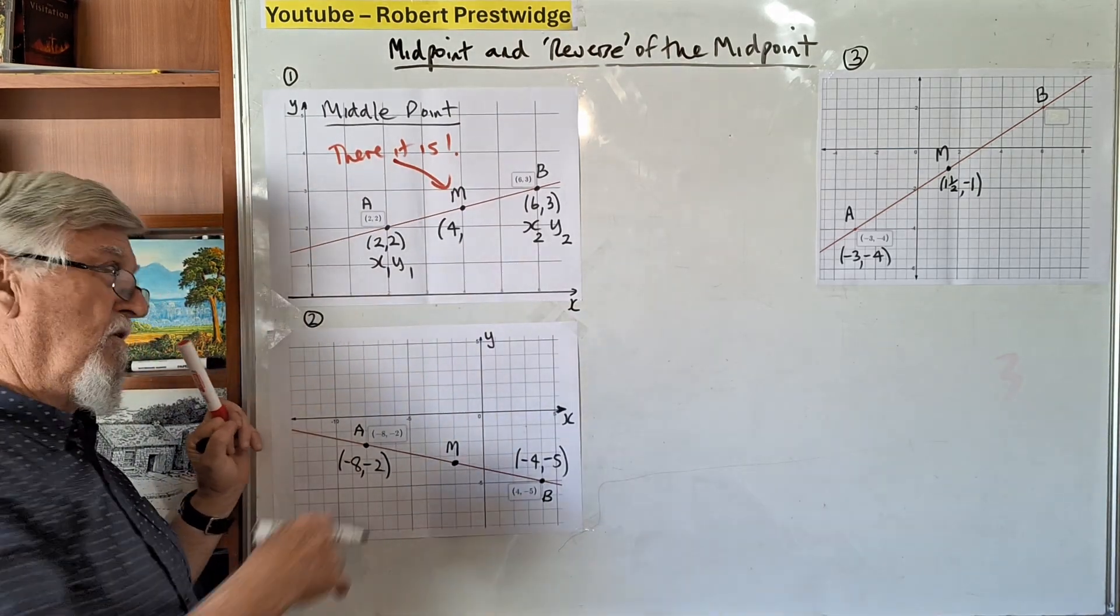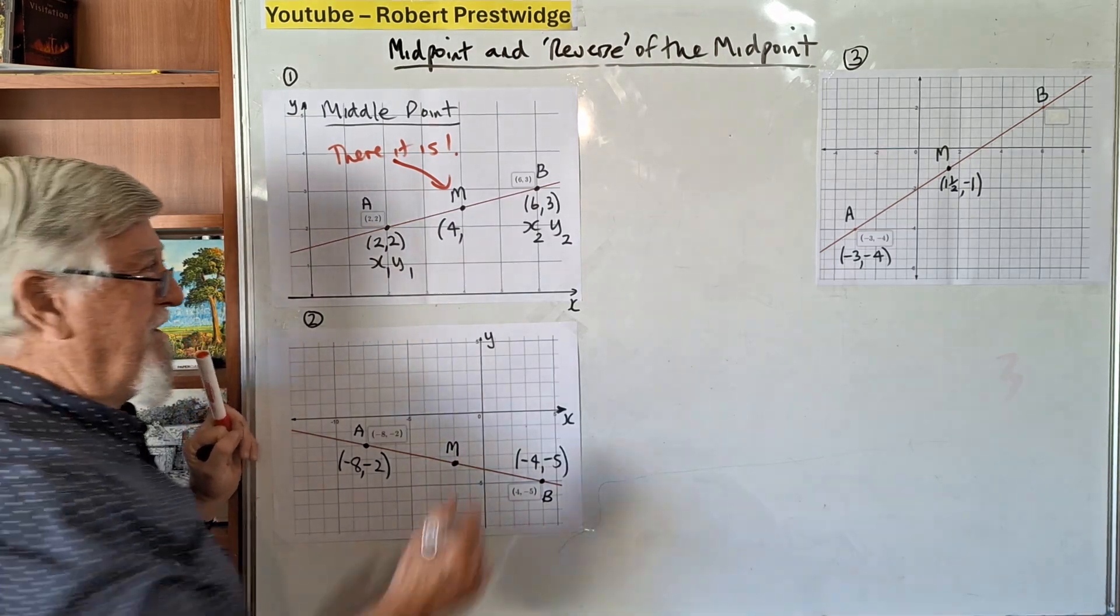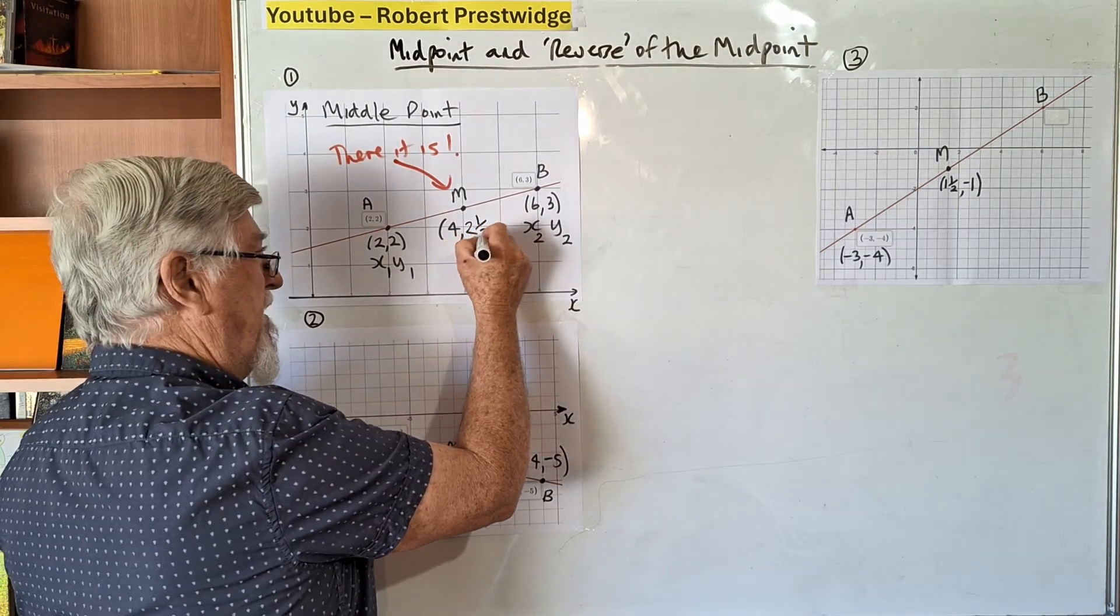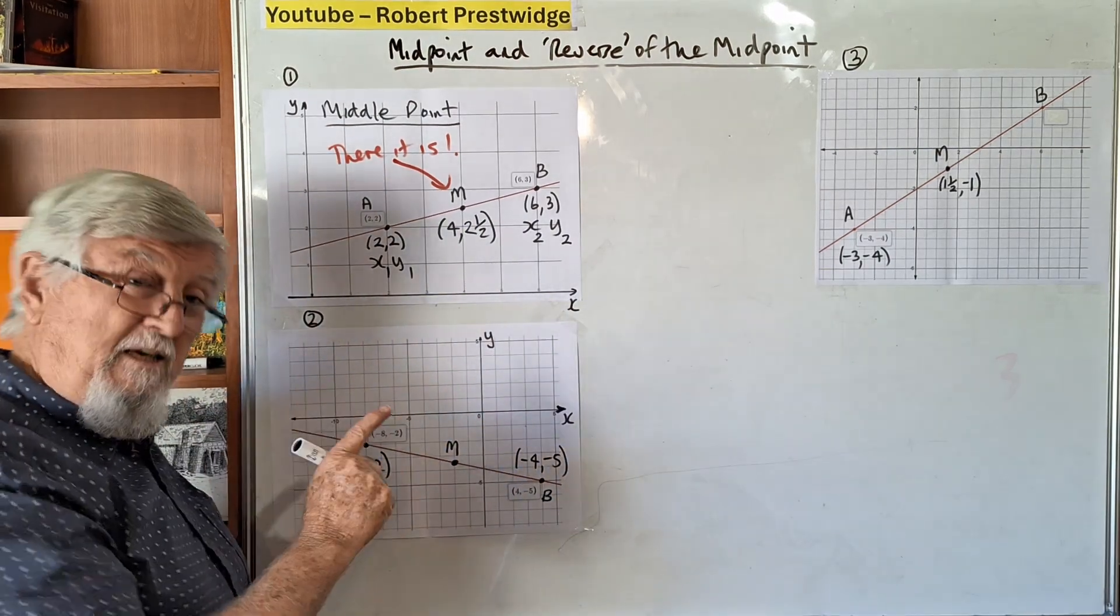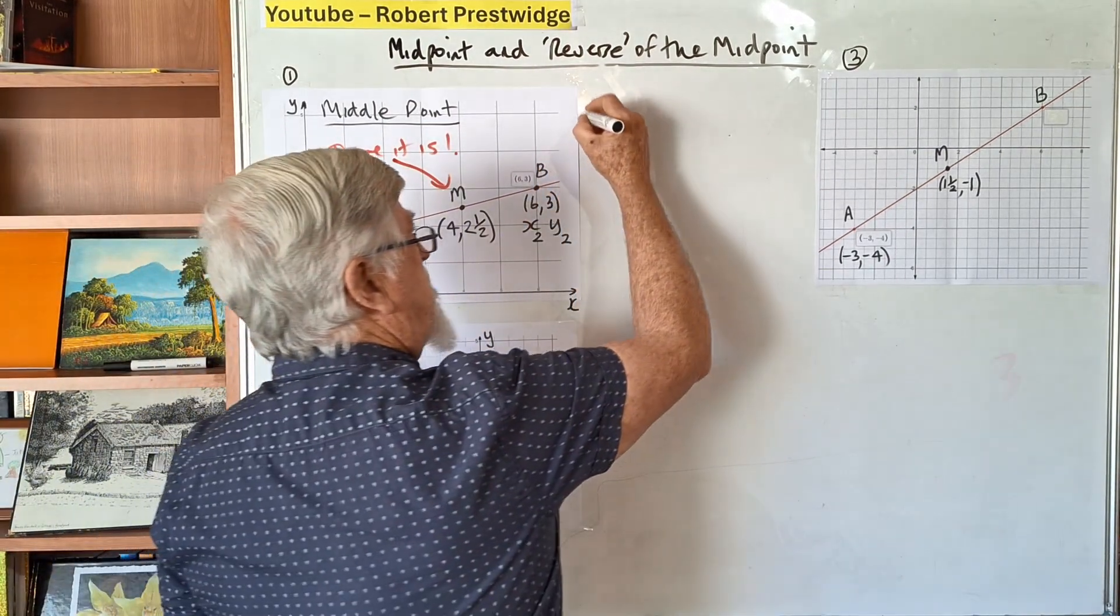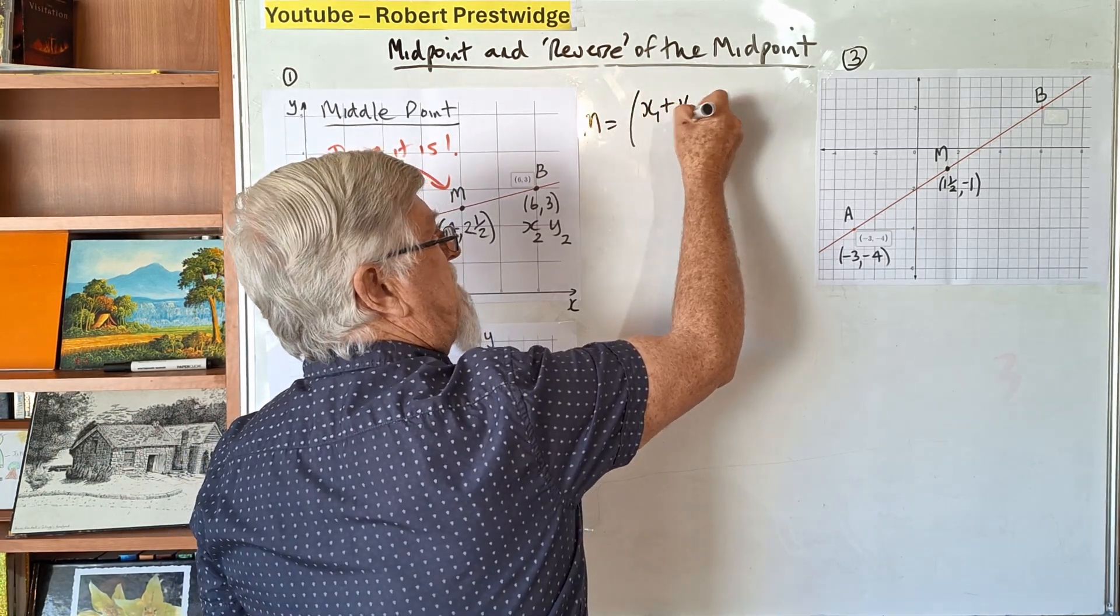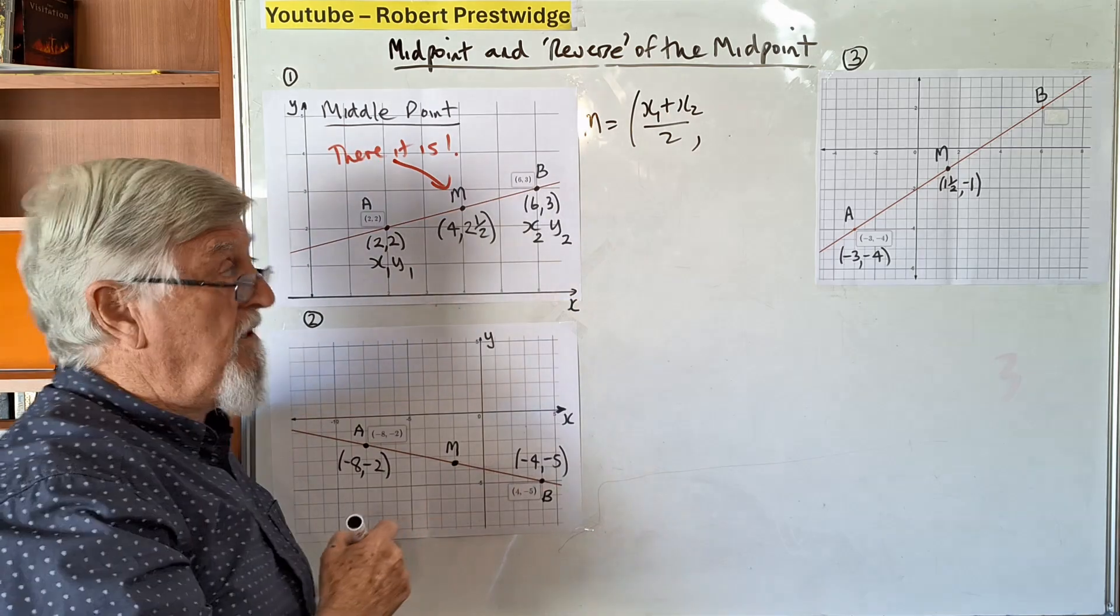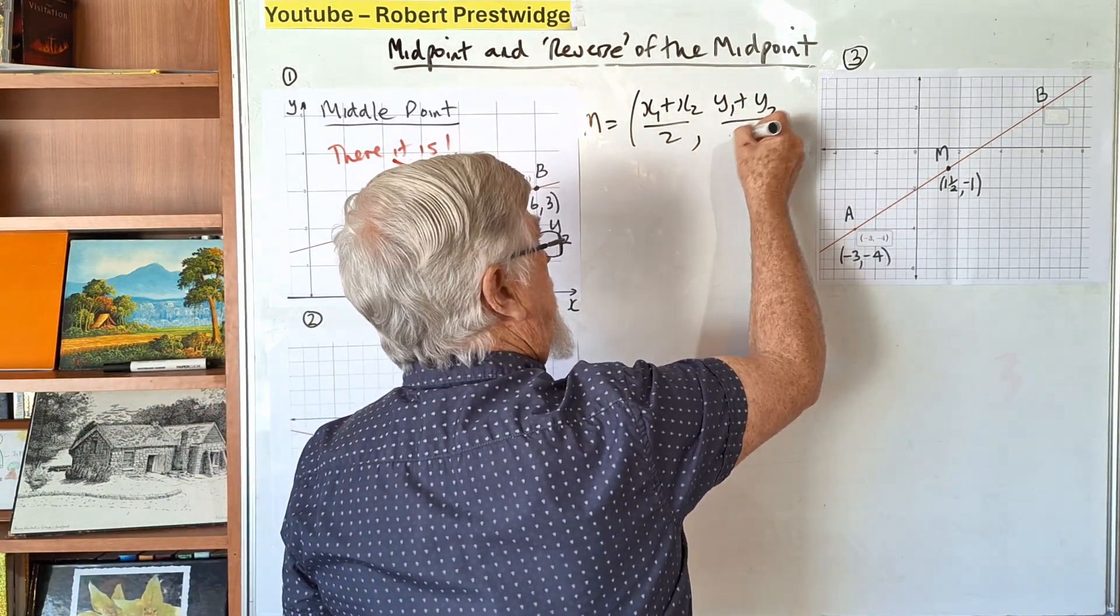Then look at the y values - this y value is 2 and that y value is 3. Most people know halfway between 2 and 3 is 2.5. I could say if I had $2 and you had $3, if we shared it, it's 2 and a half.